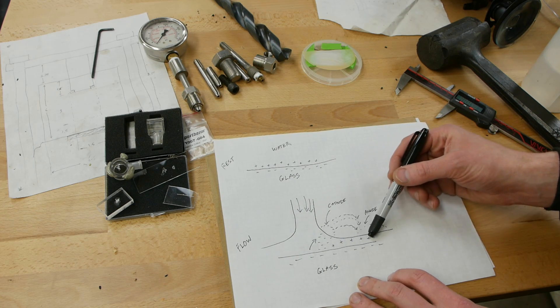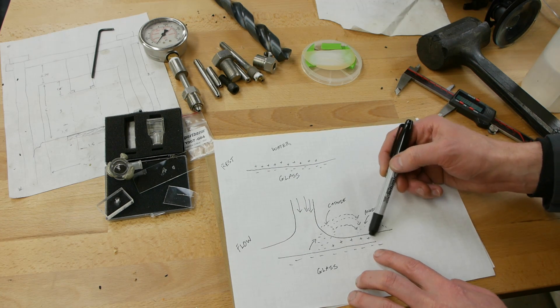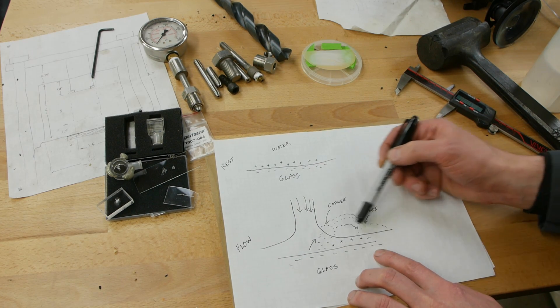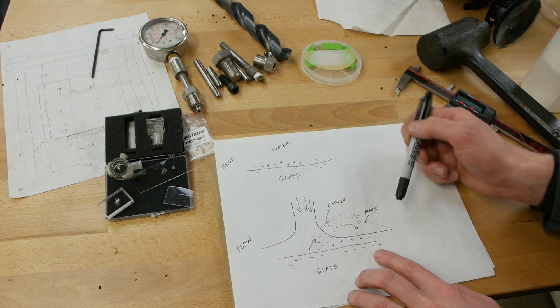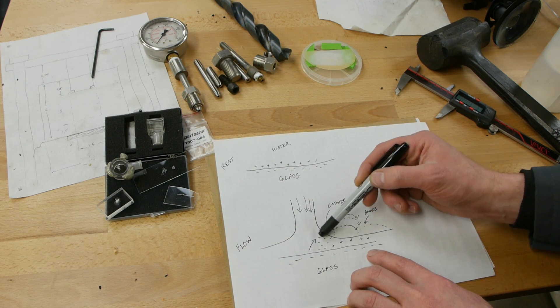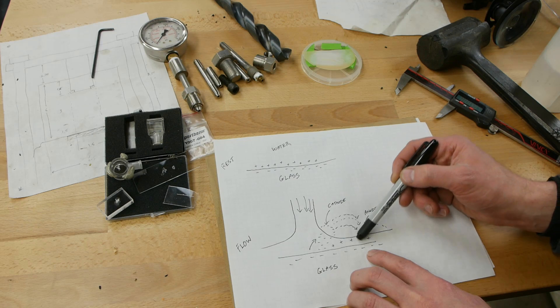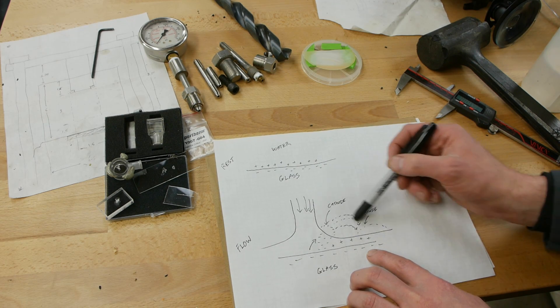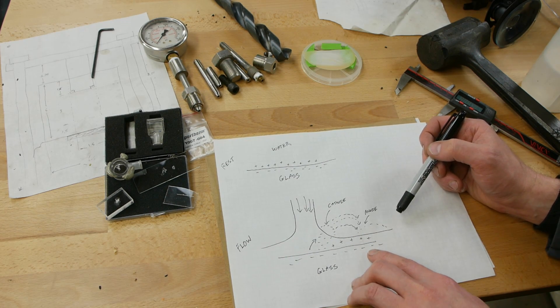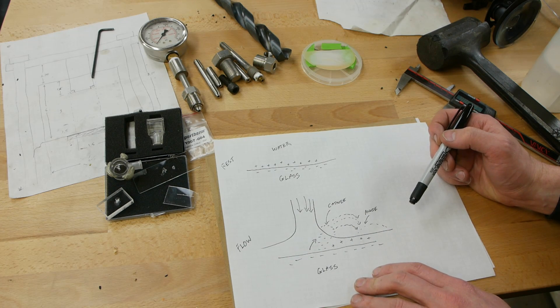And then the water carries this charge from the surface of the glass up to the surface of the water. And as the water continues out, this extreme shear region is not happening out here. Even though the water is still moving quickly, it's not as extreme as in here. And so you have sort of negative charge over here on the surface of the water and positive charge over here. And the potential difference breaks down the air and creates a plasma. It's literally arcing through the air.